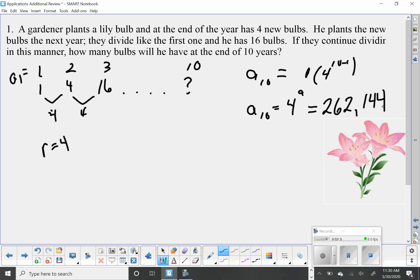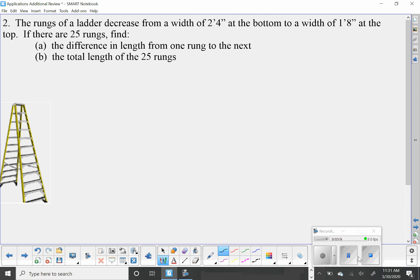That means I need to use the formula a sub n equals a sub 1, which is 1, times r, which we figured out was 4, raised to the n minus 1, which would be 10 minus 1. This means that after 10 years, if it keeps on dividing, I'm going to have 4 to the 9th, and you'll find out that you have 262,144 bulbs. Let's go on to the next one.